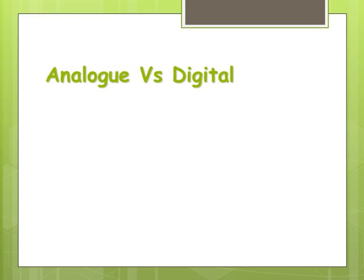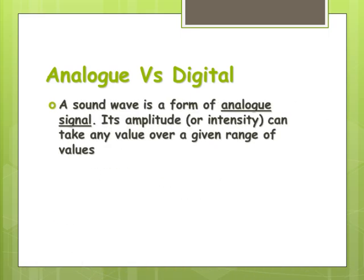I've mentioned analog and digital a couple of times, so let's define that a little bit more. Basically, sound waves are analog signals. We're talking about a variation in intensity over any given range of values. Often we represent this as waves.